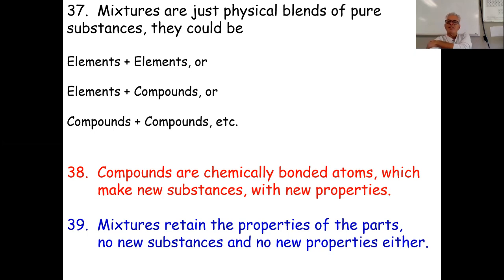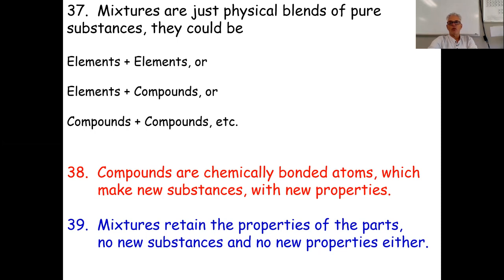The important thing about a mixture is there's no chemical formula for it. You can have H2O plus NaCl, but if I made salt water and you made salt water, mine might be saltier than yours. Unless both solutions were completely saturated — meaning holding the most possible amount of salt for that amount of water — there's no formula. One little grain of salt in a lake is technically a saltwater solution, but there's no rule as to how much salt there has to be.